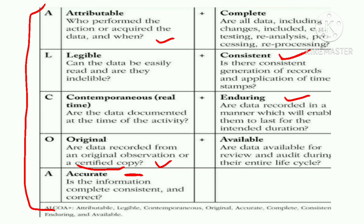Enduring means the data should be available for the entire tenure of the product. For example, if our product's expiry date is five years from now, then the data should be available for those five years. Available means our data should be easily accessible when required — for example, if an audit is taking place and the data cannot be retrieved, then it is of no use. So these four terms — Complete, Consistent, Enduring, and Available — are the plus-plus additions to ALCOA.